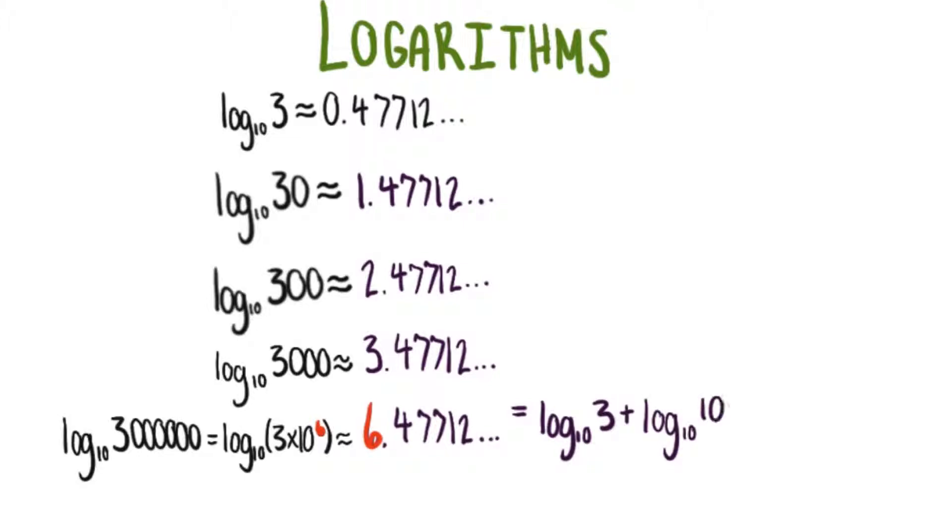Plus log base 10 of 1 million, since this is just 10 to the 6. That means that this is where we get that other 6 from, to make up this whole answer.